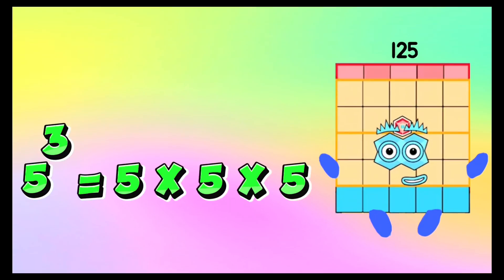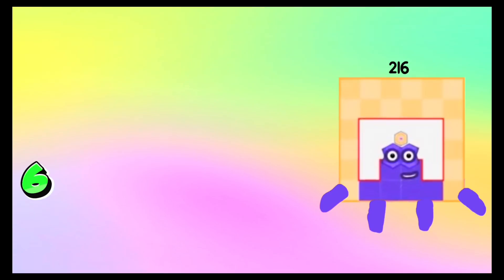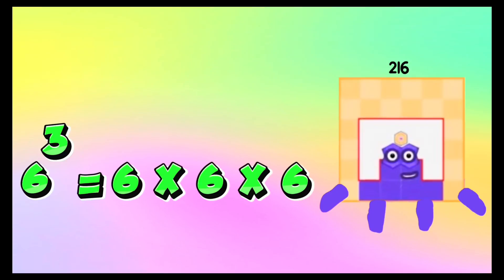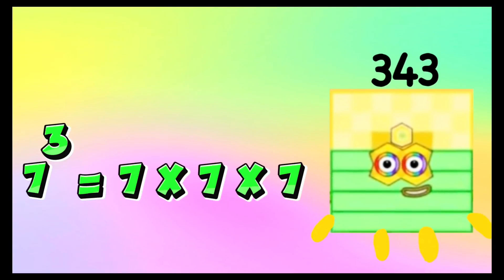One hundred twenty-five: five cube is equals to five times five times five. Two hundred sixteen: six cube is equals to six times six times six. Three hundred forty-three: seven cube is equals to seven times seven times seven.